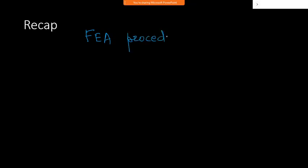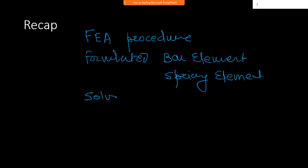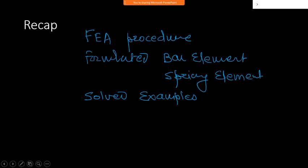In the FEA procedure, we have formulated two parts: one is the bar element and the other is the spring element - both have been discussed. After that, we solved a few examples on spring and bar elements.